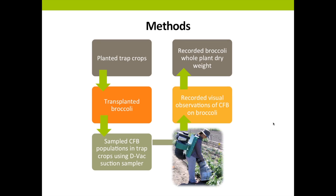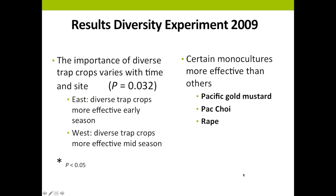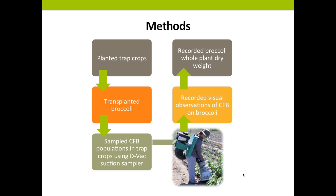For our methods, we first planted our trap crop — because you want it in the ground first and established before the pest insect arrives. We then transplanted our broccoli. We sampled flea beetle populations in the trap crop throughout the season using a D-vac suction sampler — essentially a lawnmower engine reverse-engineered to suck. We then recorded visual observations of flea beetles on broccoli and at the end of the season recorded broccoli whole plant dry weight.